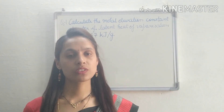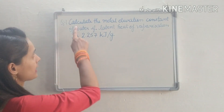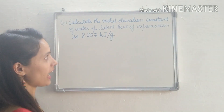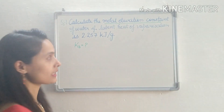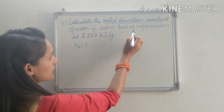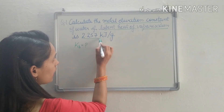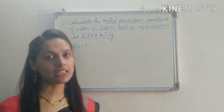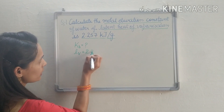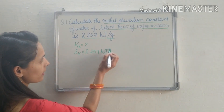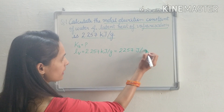This is our first question, which is based on the elevation of boiling point. We have to calculate the molal elevation constant, that is Kb, of water. The latent heat of vaporization is given to us as 2.257 kilojoule per gram, which is the latent heat of vaporization per gram. So Lv = 2.257 kJ/g, and converting to joules gives 2257 J/g.